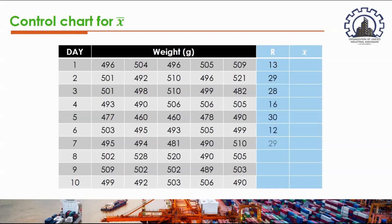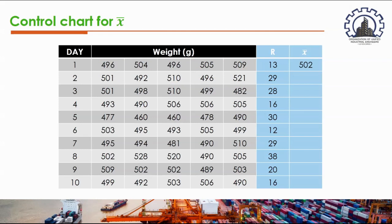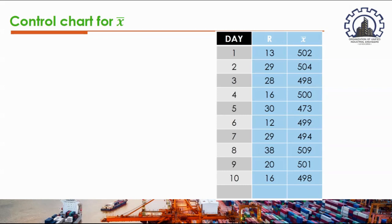We repeat the same procedure for samples from day 2 through day 10. The mean for the first sample is obtained by adding up the values and dividing by 5, which gives 502. We apply the same procedure for the remaining samples, and those values are already listed.